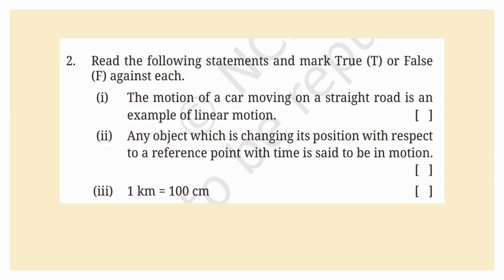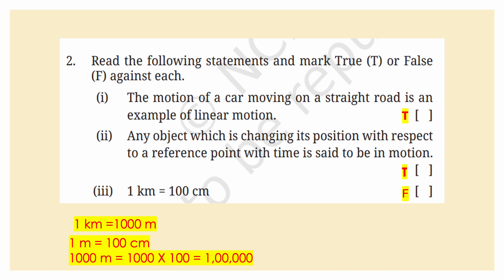Read the following statements and mark true or false. The motion of a car moving on a straight road is an example of linear motion — True. Any object changing its position with respect to a reference point with time is said to be in motion — True. 1 kilometer is equal to 100 centimeters — False. 1 kilometer equals 1000 meters, and 1000 meters equals 1 lakh centimeters.